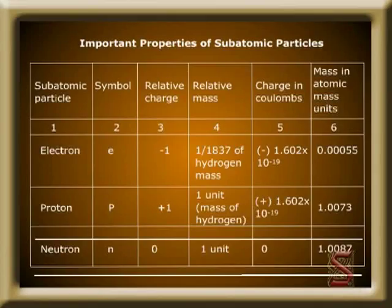Experiments in atomic theory revealed the existence of more than hundred subatomic particles. However, the most important subatomic particles to understand the structure of atom are electron, proton and neutron. Let us see the important properties of these subatomic particles. Let us take a look at this table that displays the important properties of subatomic particles.